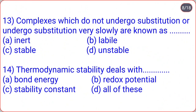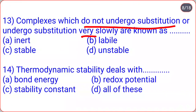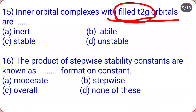Complexes which do not undergo rapid substitution, or undergo substitution very slowly, are known as inert. Thermodynamic stability deals with bond energy, redox potential, and stability constant — all of these, option D. Inner orbital complexes with filled t2g orbitals are inert.